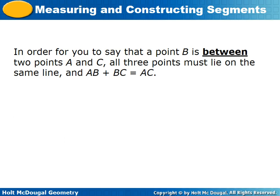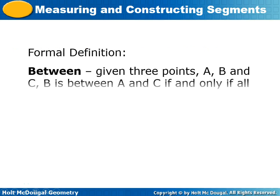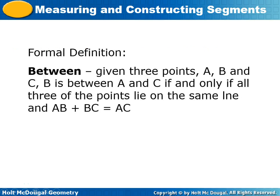For a point B to be between two points A and C, three conditions must be met: all three points must lie on the same line, and AB plus BC must equal AC. For example, if AB is 3 and BC is 5, then AC is 8 — we just add the two parts together. The formal definition: given three points A, B, and C, B is between A and C if and only if all three points lie on the same line and AB plus BC equals AC.